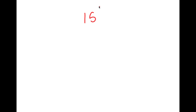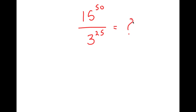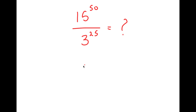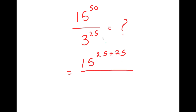In this video, I'm going to solve the problem 15 to the power of 50 over 3 to the power of 25. To solve this, I'm going to first start by rewriting this as 15 to the power of 25 plus 25, so we wrote 50 as 25 plus 25, over 3 to the power of 25.